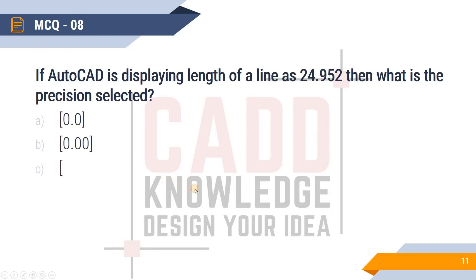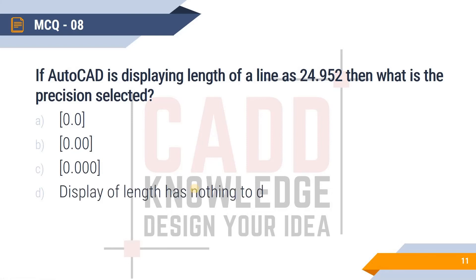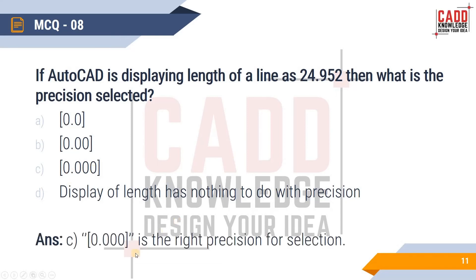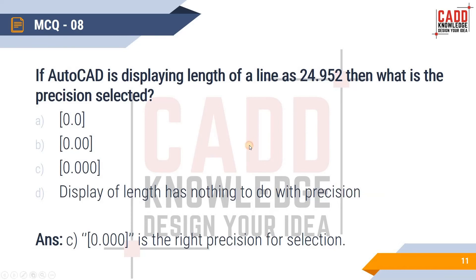MCQ 8: If AutoCAD is displaying the length of a line as 24.952, what is the precision selected? From the number you can see there are three digits after the decimal point: 0.952. So the precision setting is 0.000, because it also shows three places after the point. The answer is 0.000.